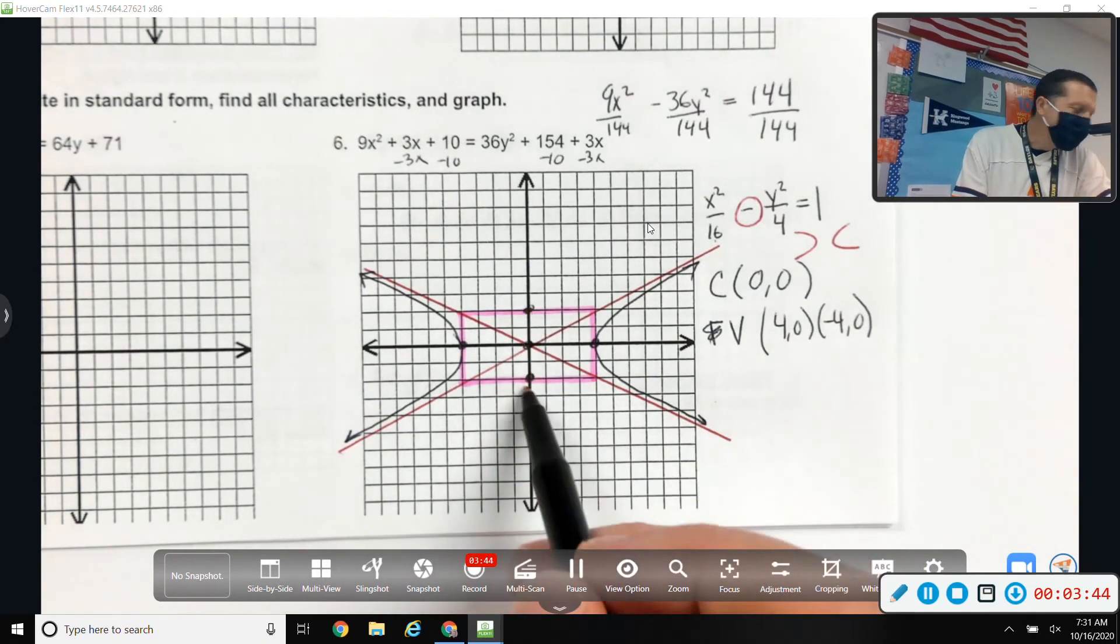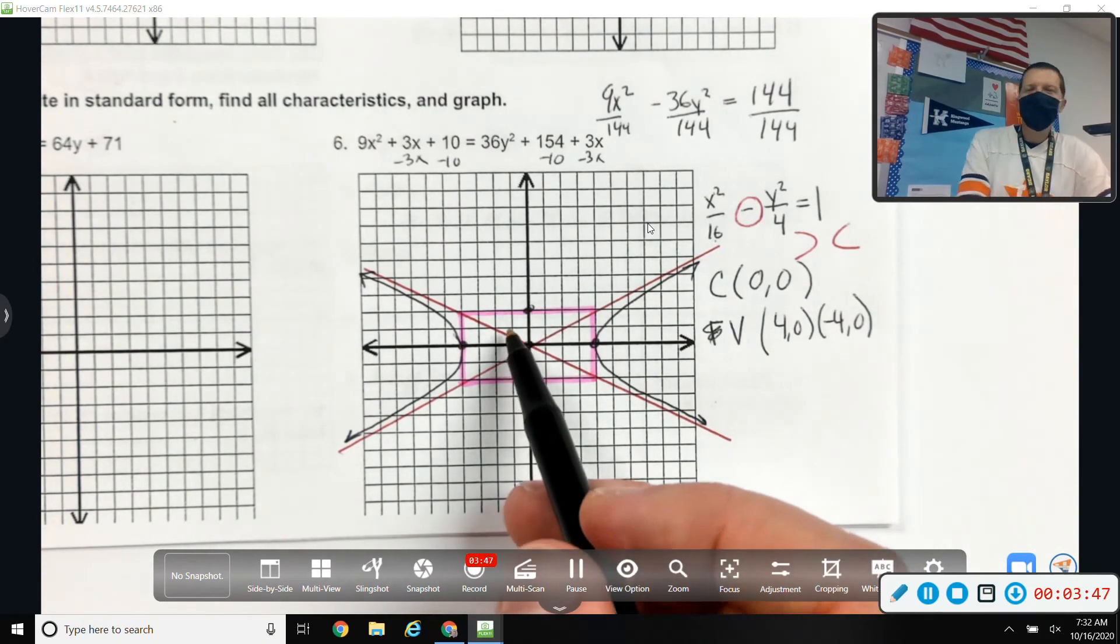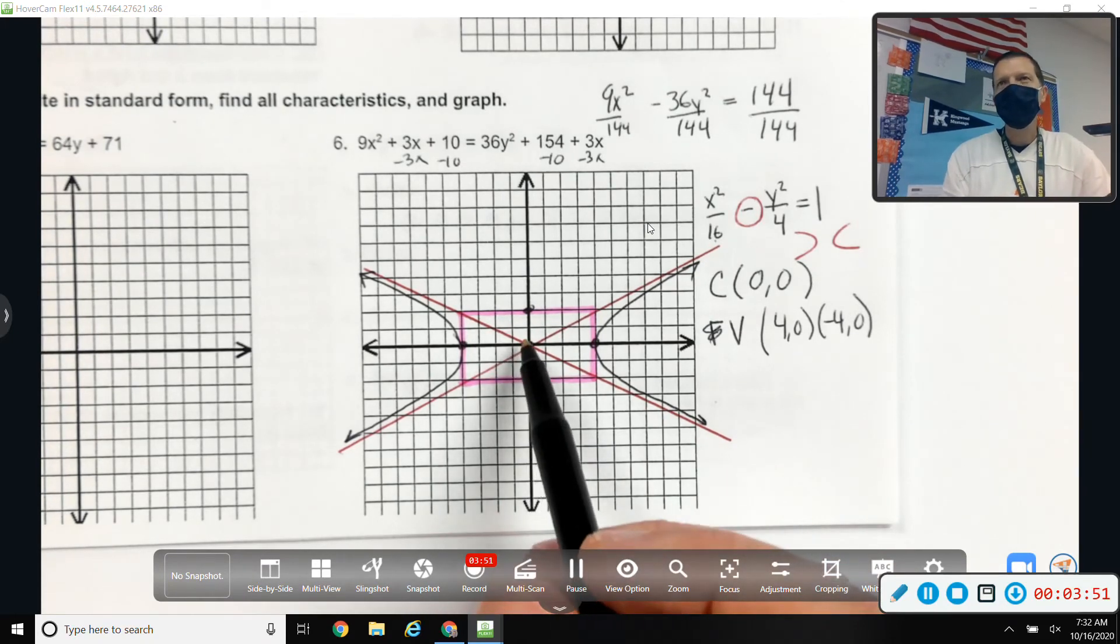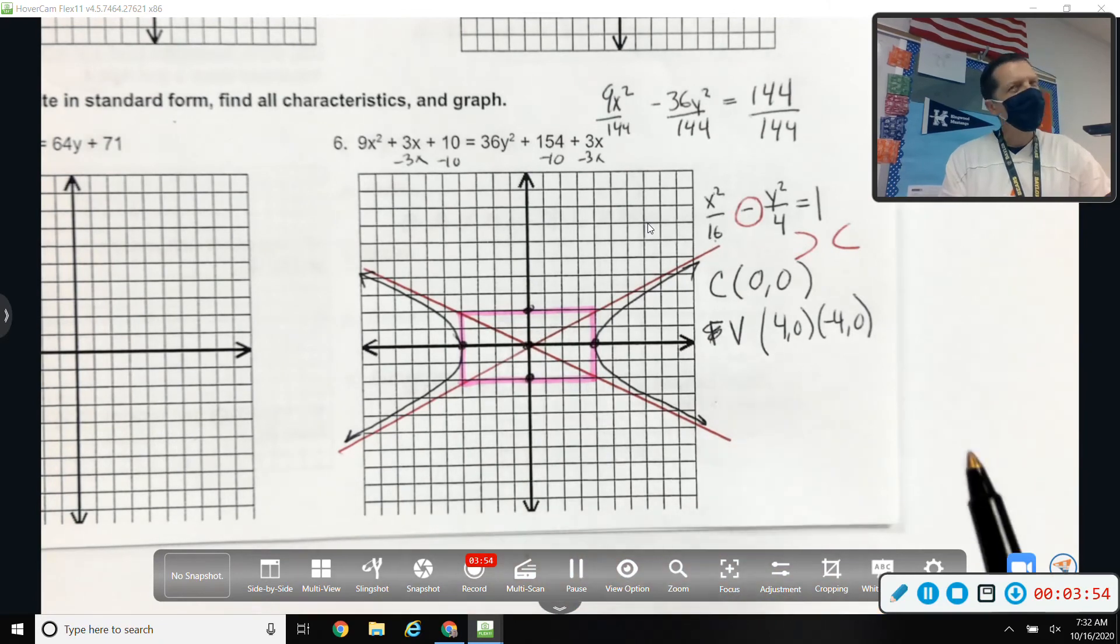You could list the other two if you want to. There's a fancy name for them. I forget what it's called. It's like fake vertices, basically. Because they help, but they're not part of the graph. So, they're not really vertices.